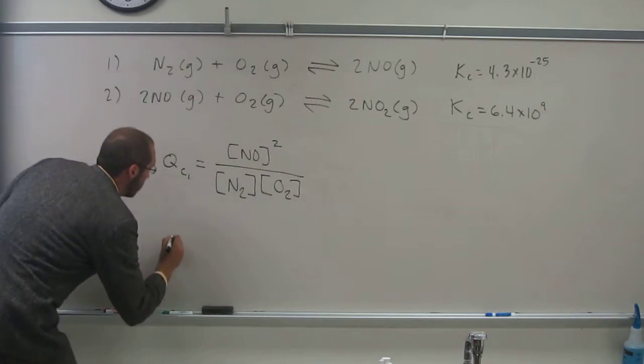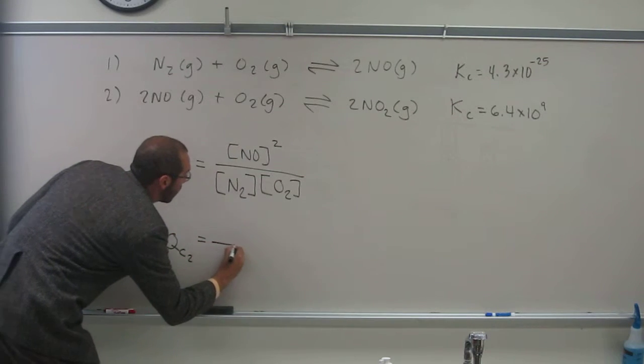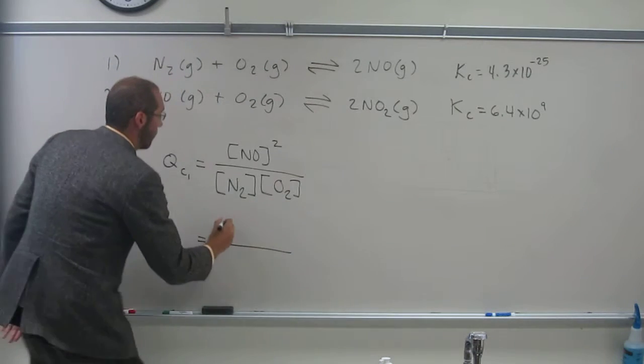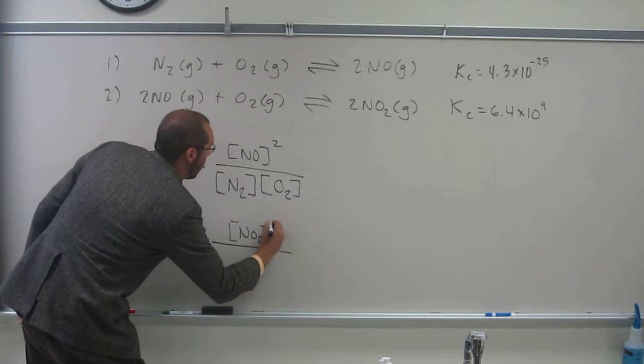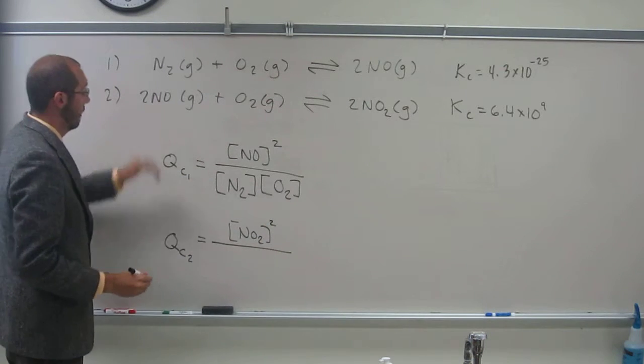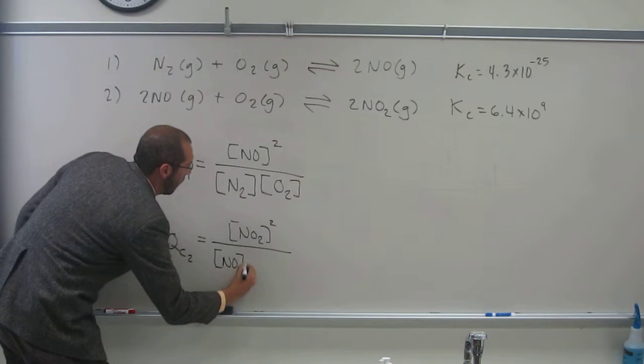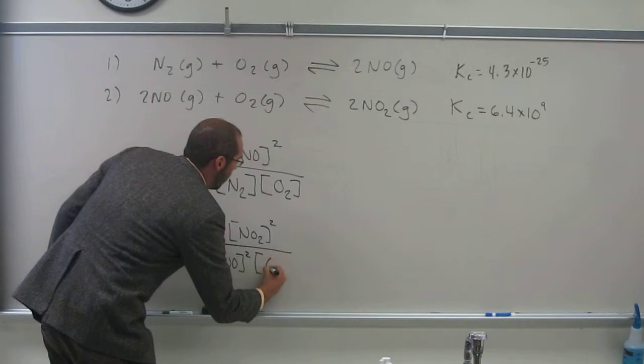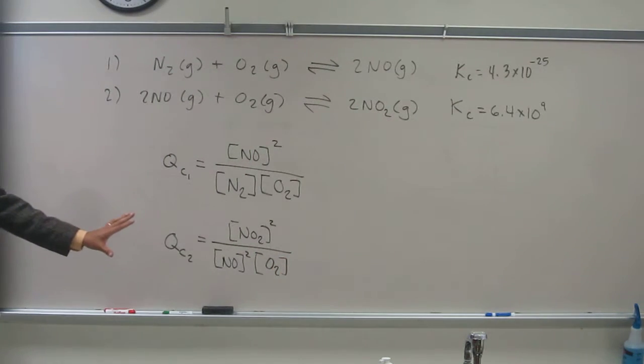Divided by the concentration of N2 times the concentration of O2. So QC2 is going to be the concentration of NO2 squared divided by the concentration of NO squared times the concentration of O2. Is everybody okay with that?